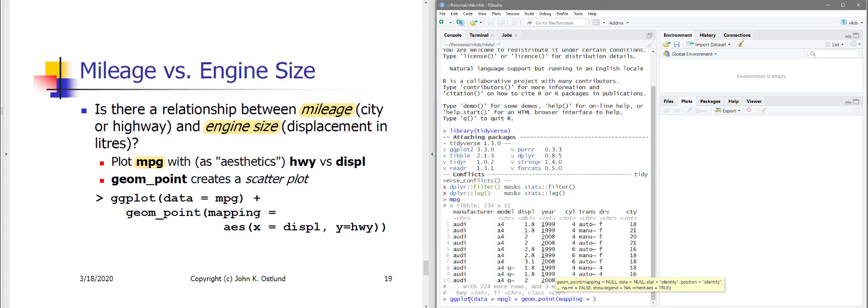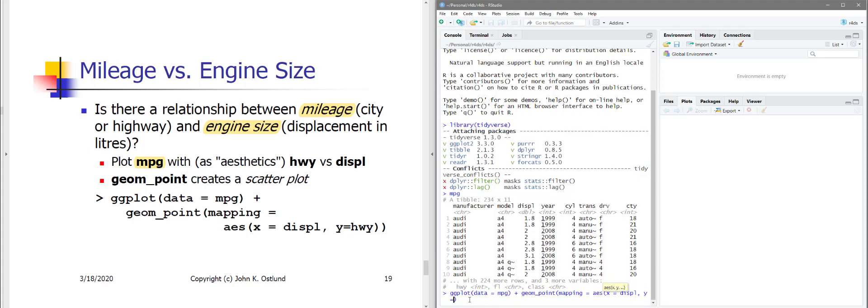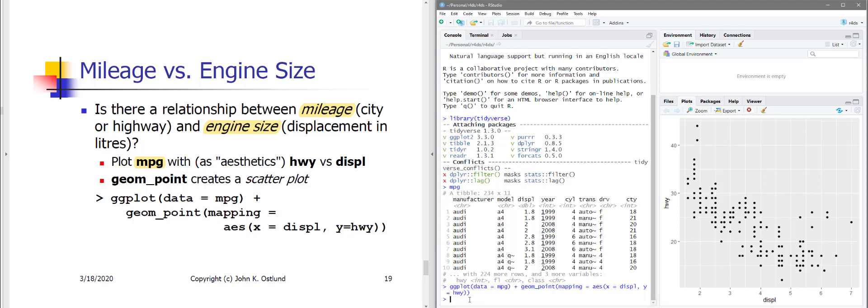And this is, I'm doing this fairly briskly. This is going to be much better explained when you read through the full documentation in the textbook. What I want is my aesthetics to have the displacement on the x-axis and the highway miles per gallon on the y-axis. And there we are. And poof!